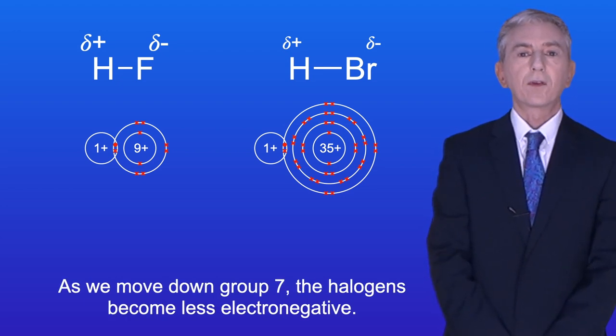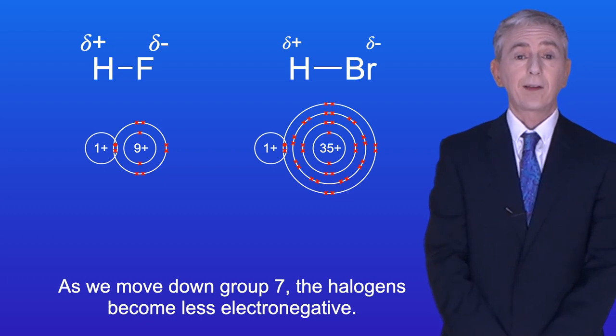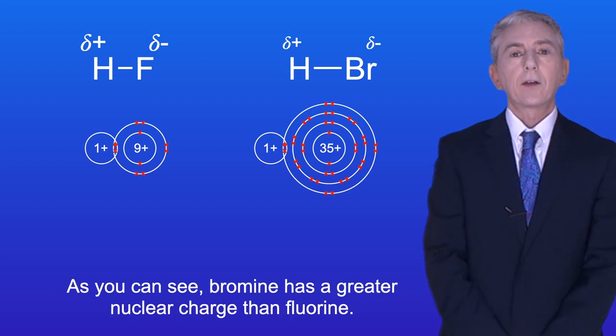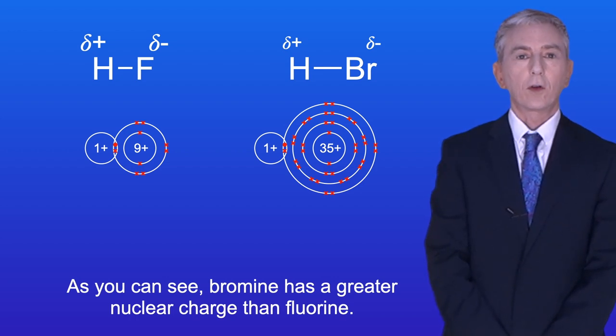Now, as we move down Group 7, the halogens become less electronegative. As you can see, bromine has a greater nuclear charge than fluorine.